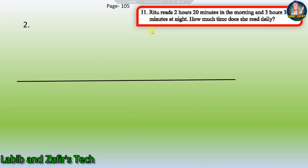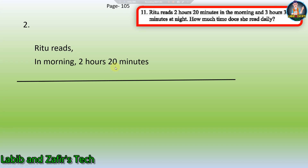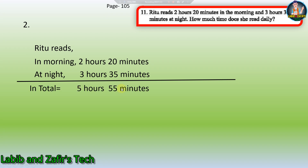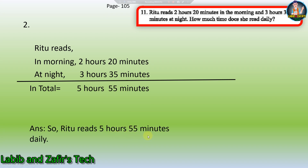Now let's see the next question. Ritu reads 2 hours 20 minutes in the morning and 3 hours 35 minutes at night. How much time does she read daily? You have to add 2 hours 20 minutes and 3 hours 35 minutes to find out the answer. If we add then we get 5 hours 55 minutes, because 20 plus 35 is 55 and 2 plus 3 is 5. So Ritu reads 5 hours 55 minutes daily.